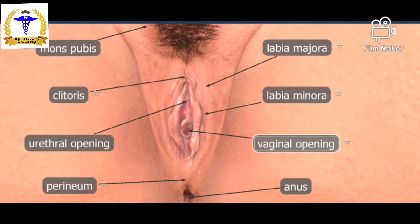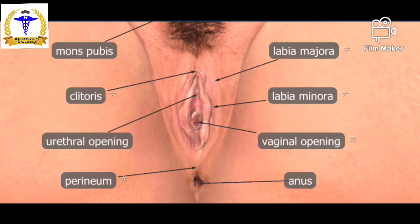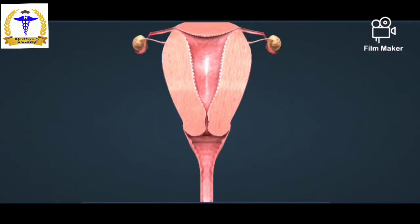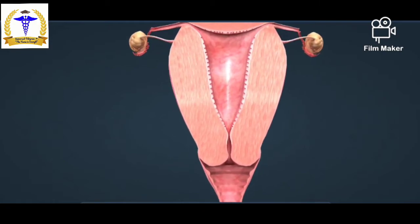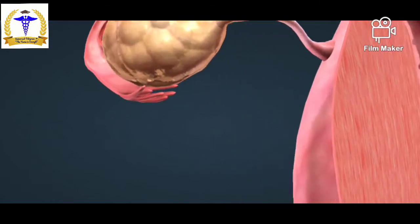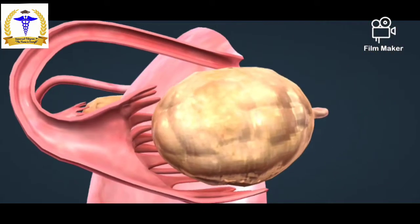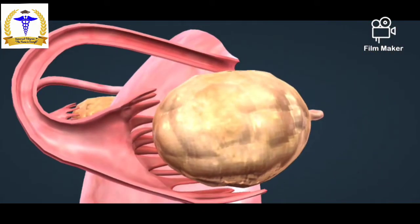Next, we will discuss the menstrual cycle of the female reproductive system. The female menstrual cycle represents a series of natural changes that occur cyclically. The cycle starts on the first day of menstrual bleeding and is 28 days long on average. Ovulation takes place in the middle of the cycle.